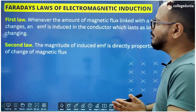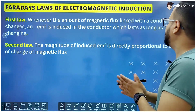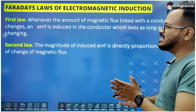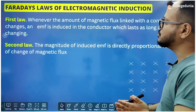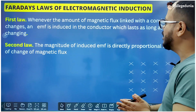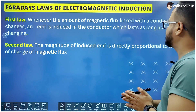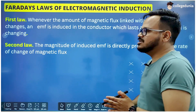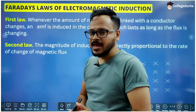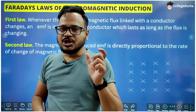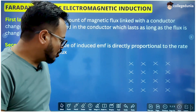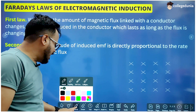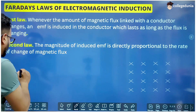What is the first law? The first law says that whenever the amount of magnetic flux linked with the conductor changes, an EMF is induced in the conductor, which lasts as long as the flux is changing. To understand this law, let us first revise the meaning and formula of magnetic flux.